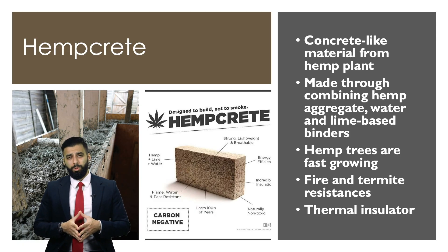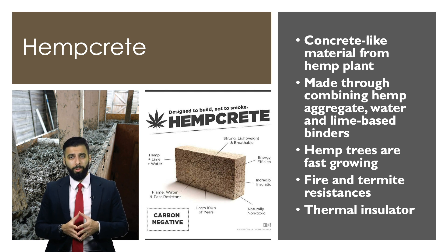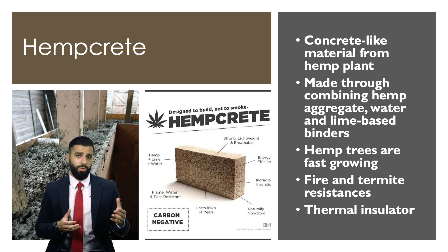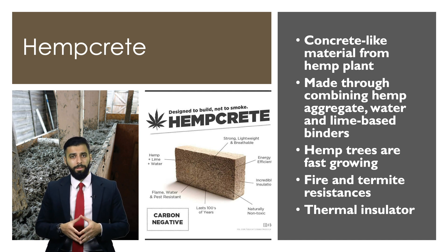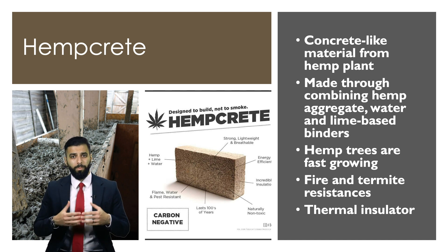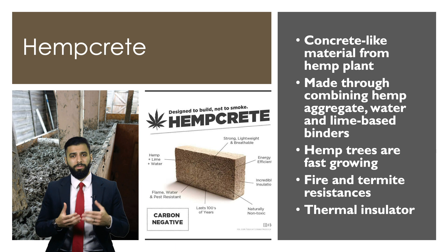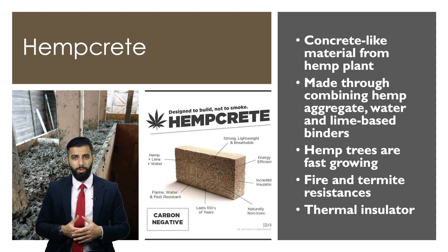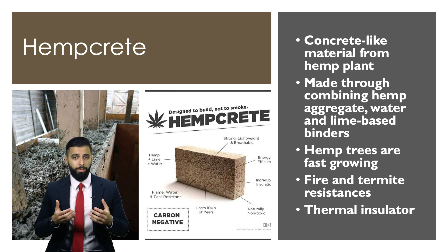Hempcrete is a concrete-like material made from the woody fibrous hemp plant, combining hemp aggregate with water and lime-based binders. The lime binds the fibres together in the shape of a block. Hemp is considered a fast-growing plant, hence why this is a sustainable construction material. The material is fire and termite resistant and also acts as a thermal insulator.